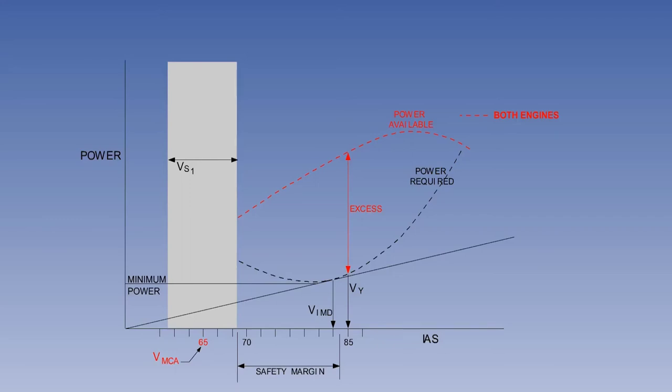Although thrust reduces with speed, total power available increases to a point because of the speed factor. Similarly, power required is a measure of drag times TAS, so excess power available determines the available rate of climb.